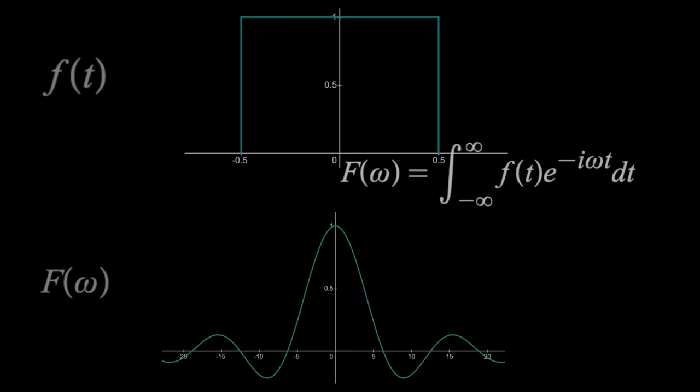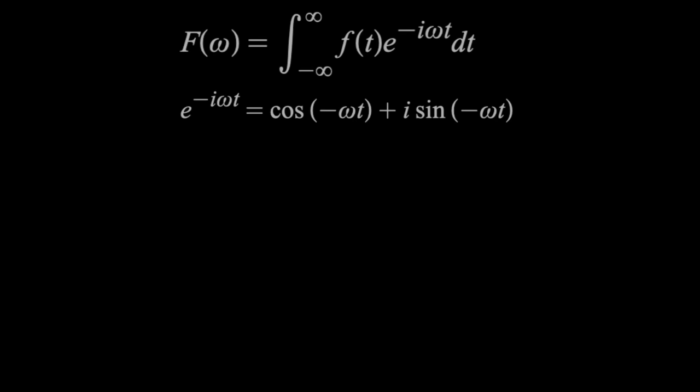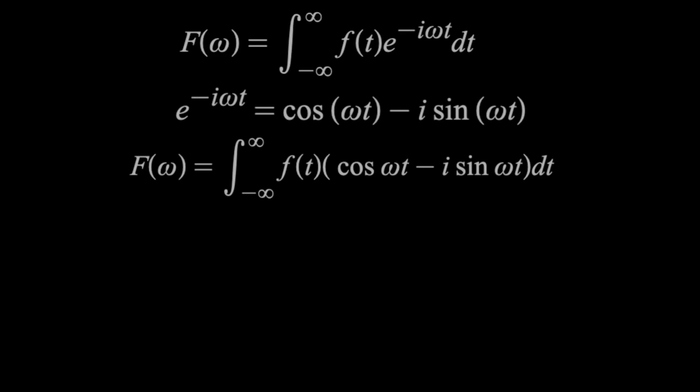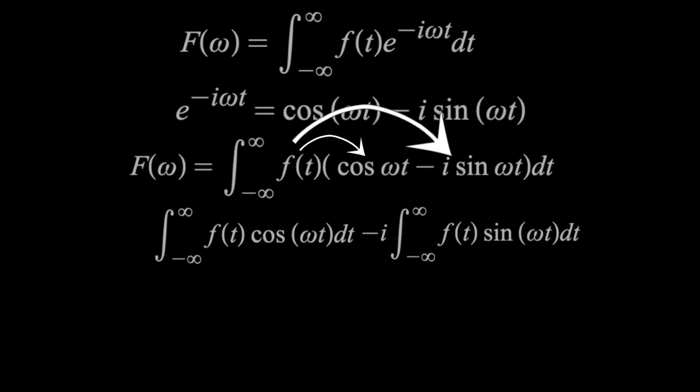First we can expand e to the minus i omega t by using Euler's formula. By basic trig rules, the negative in the cosine can just be removed, and the negative in the sine function can be moved to the front as shown. Then I'm going to replace the exponential in the integral with that. And lastly we'll distribute the f of t inside, so we can split this into two integrals, one with the cosine and one with the sine, where the i has been pulled out of the right one.